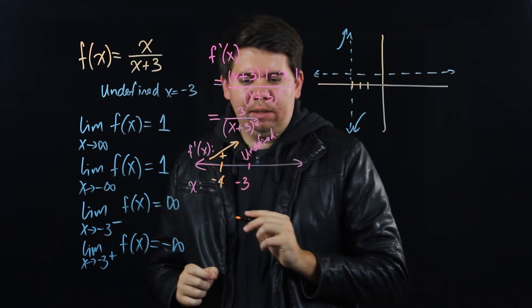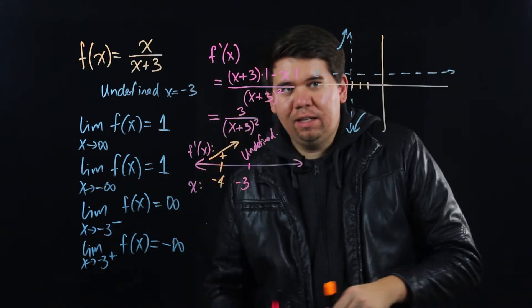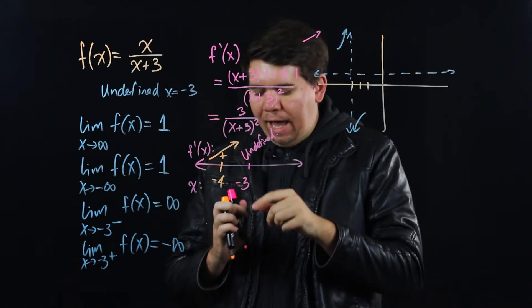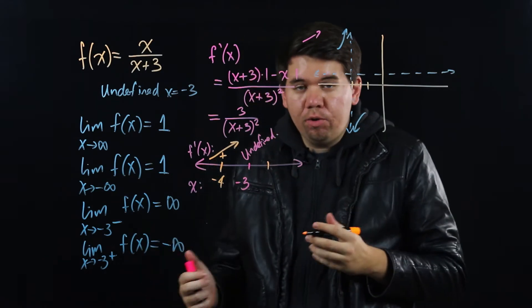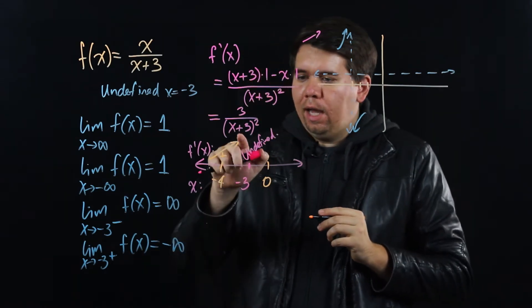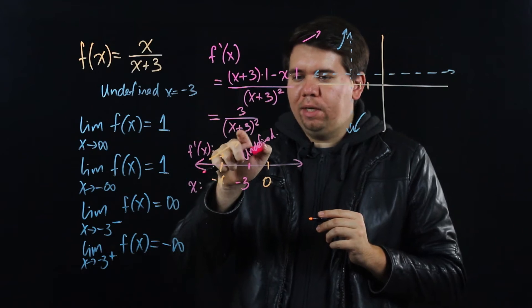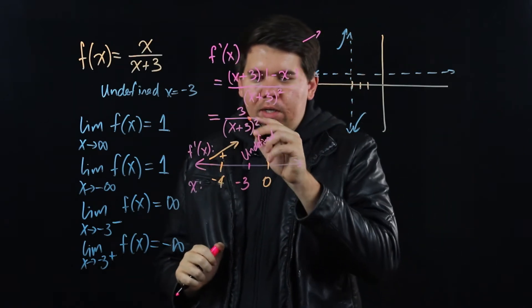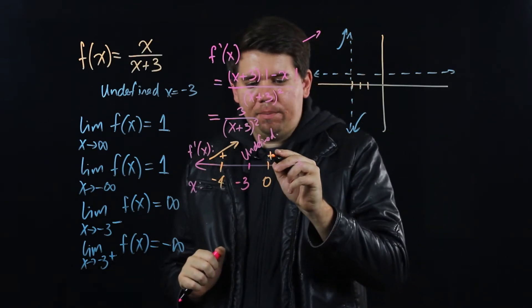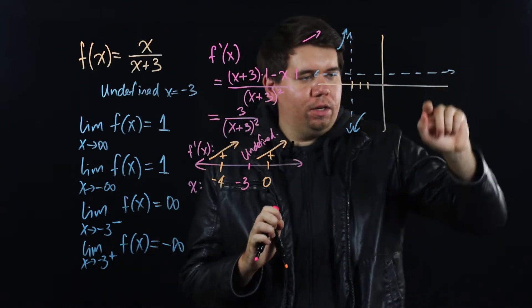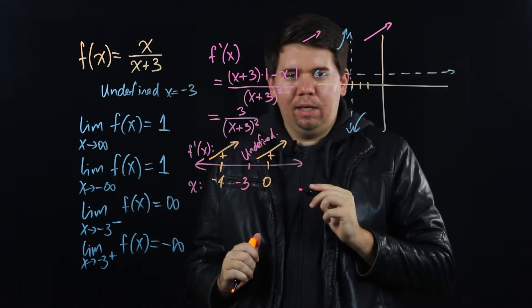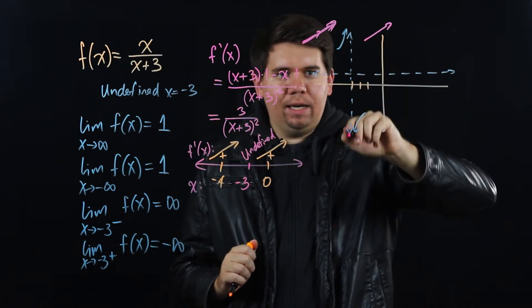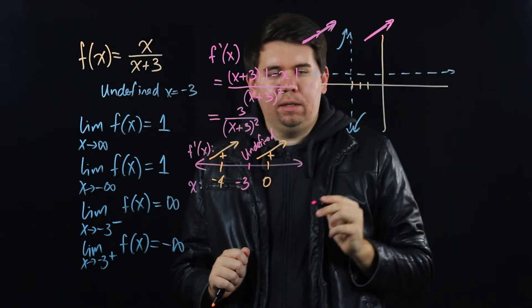The derivative is positive, so the function is increasing before x = -3. After x = -3, plugging in 0: 0 plus 3 is 3, squared is 9, and 3 divided by 9 is one third — still positive. So the function is also increasing after x = -3. The function is increasing on both sides of the asymptote.